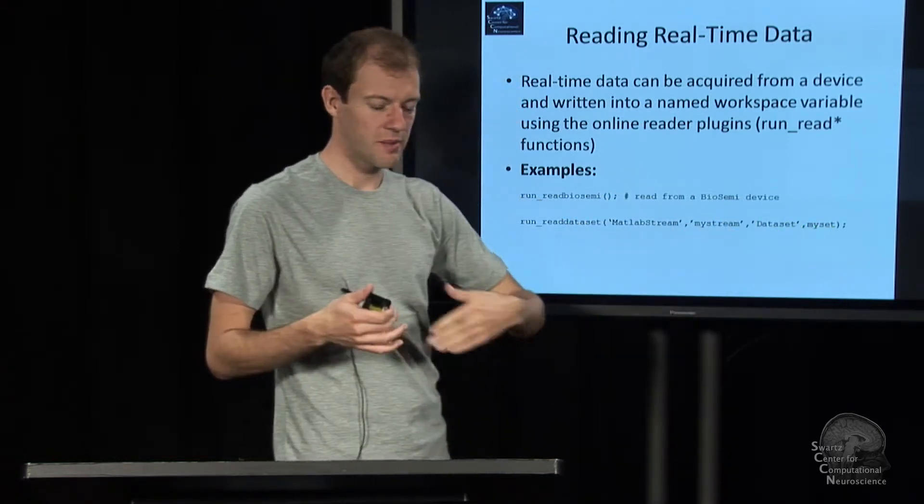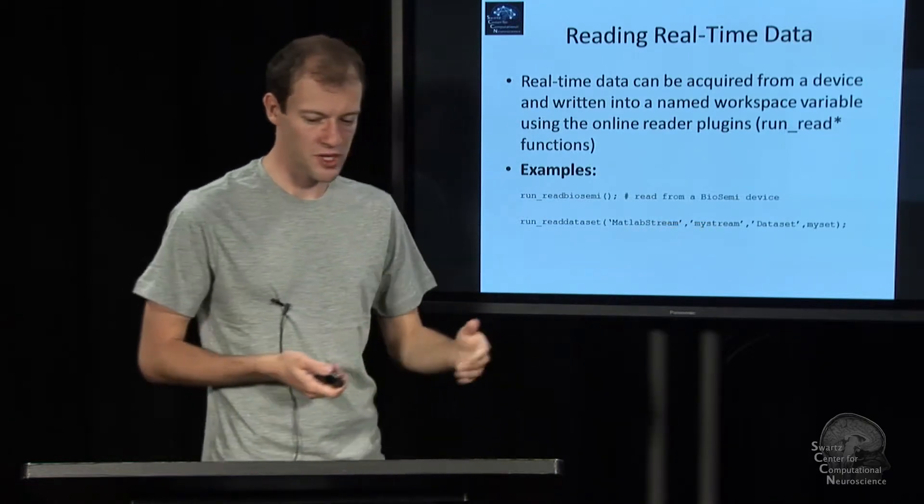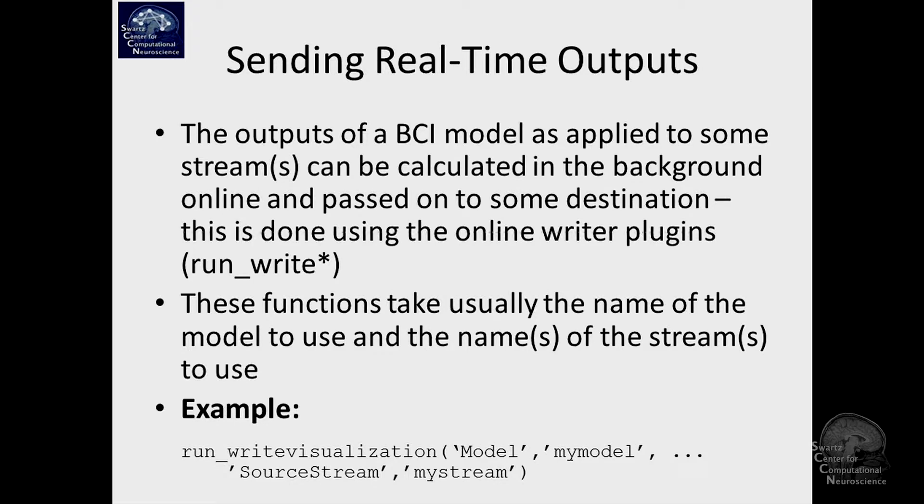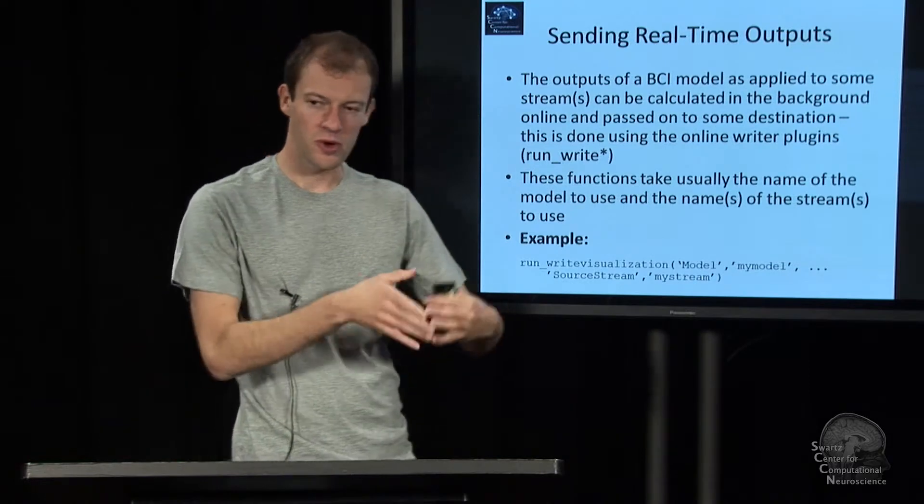Primarily, it takes a data set that you want to play back, and then it also allows you to name the stream that it generates in the workspace and that it updates. The stream is kind of a buffer. To process things online, given some stream that's updated in the background, there's these online writer plug-ins, and they also start with run_ and then write. There's a few of them for TCP and OSC and various protocols, and also this very simple one just to draw a visualization. We saw this from the GUI. It takes a model or actually the name of the model that it should utilize in the workspace, name of a variable. You can also put the structure in here yourself, though.